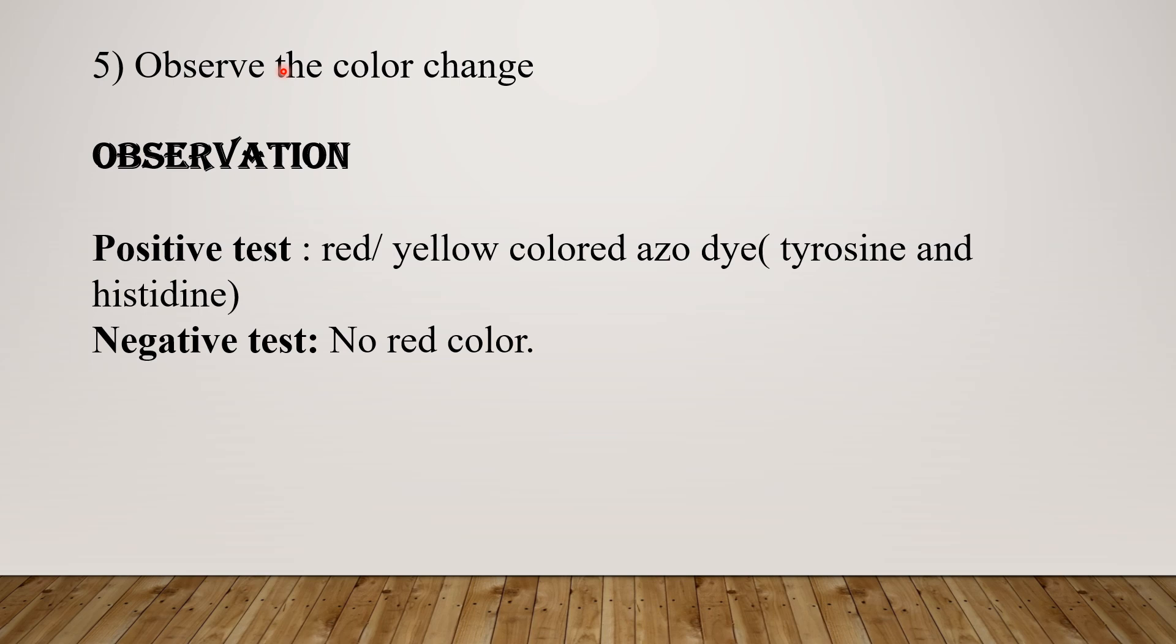In the observation, if the test is positive, you will see a dark red color in the test tubes. And this shows that the diazonium component has formed and a successful reaction occurred with the sample. It means the sample contains tyrosine or histidine.